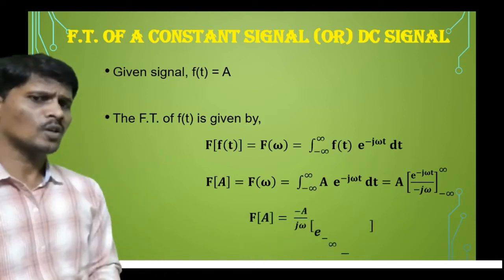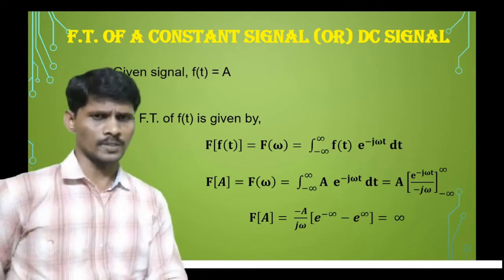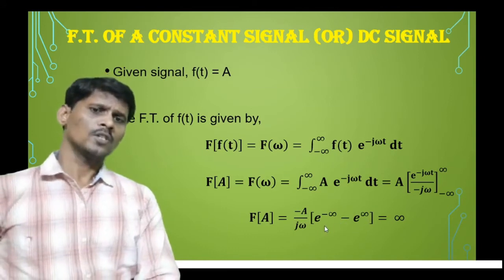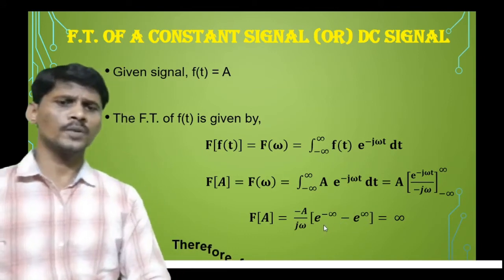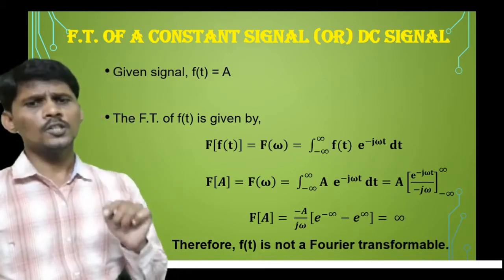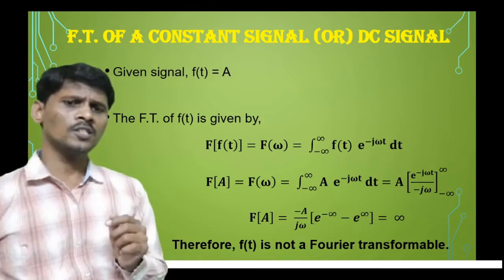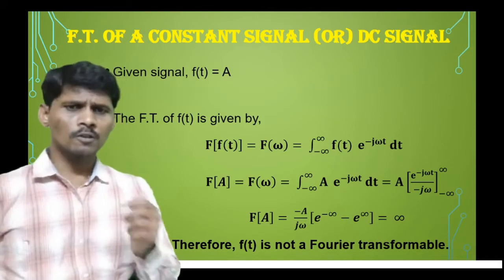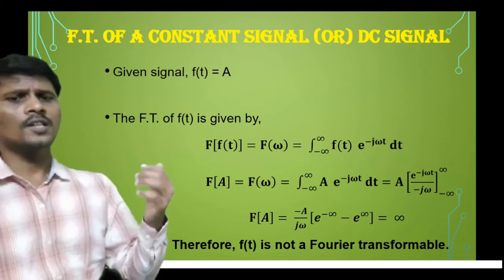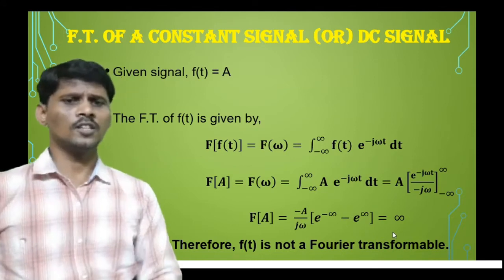Applying the limits, the upper value is plus infinity and lower value is minus infinity. So we get e to the power minus infinity minus e to the power infinity. The value of e to the power minus infinity is zero, and e to the power plus infinity is infinity. So we get zero minus infinity, with a constant A divided by jω before it. Infinity times a constant is infinity. Therefore, the Fourier transform of a constant function is infinity.